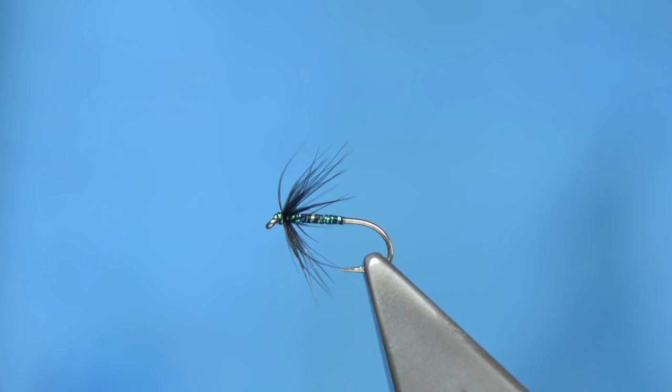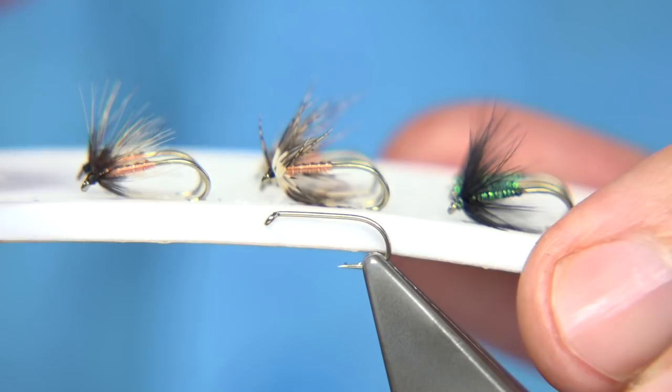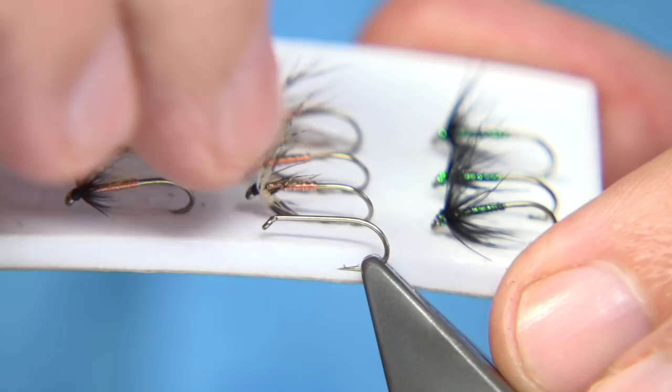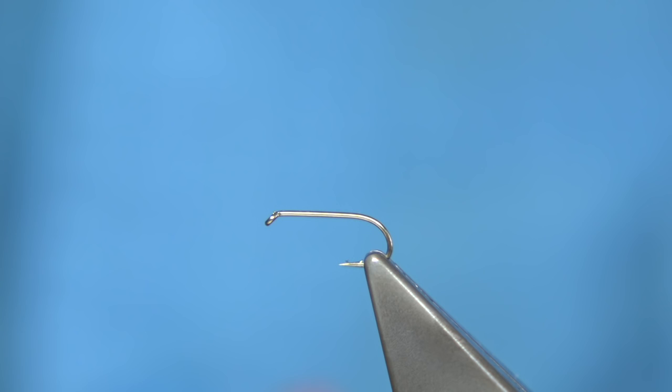Now, for the second pattern I'm going to be tying is this one in the middle. This is just a grouse covert, lesser covert feather which comes from the wing and the body is copper wire. Now, the reason I like using that, this is a good point fly. It turns your cast over really well and it gives you a slight anchor on the flies that you're fishing and you'd be surprised how well this works.